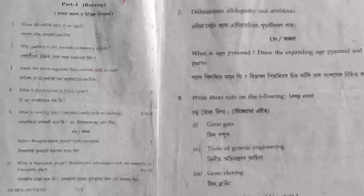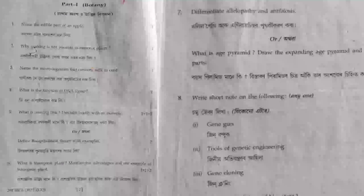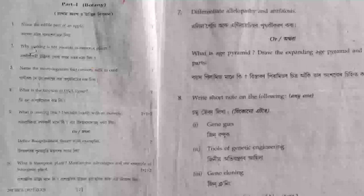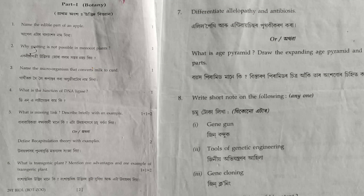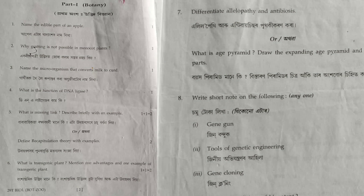Next question: what is a transgenic plant? Mention two advantages and one example. Transgenic plants are those plants that contain a foreign gene. Their advantages are that they may be disease resistant and pest resistant. One example is Bt cotton, or Bacillus thuringiensis cotton.